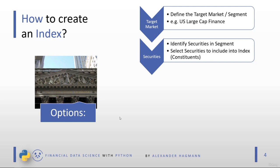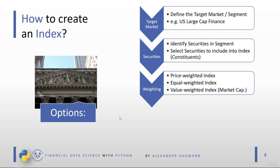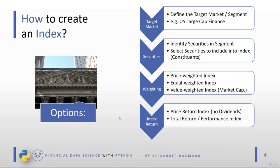Once we have selected the constituents, the next question is how to weight them in our index. There are three major weighting methods: price-weighted indexes, equal-weighted indexes, and value-weighted indexes. We will examine those methods in detail in the next videos. Then we have the index return step, where we define whether our index should be a price-return index or a total return (performance) index.